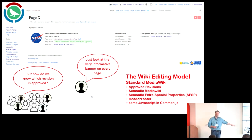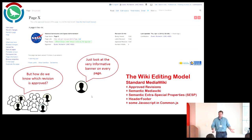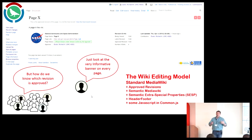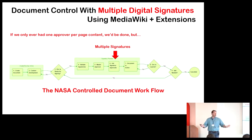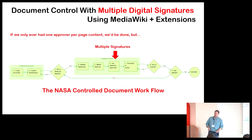My user's question of 'how do we know which revision is approved?' is answered — you just look at the very informative banner on every page, and you can't go wrong. That's the end of the first chapter. But if we only ever had one approver per page, we'd be done. In an enterprise environment, there are often multiple stakeholders.